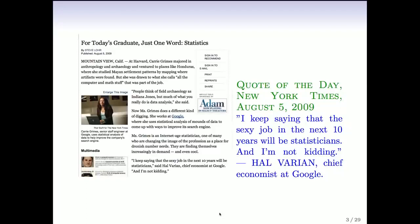Google is a big user of data and a big analyzer of data. Here's a quote that came in the New York Times in 2009 from Hal Varian, the chief economist at Google. He says the sexy job in the next 10 years will be statisticians. There's a picture of Carrie Grimes, a graduate from Stanford Statistics, who was one of the first statisticians hired at Google. Now Google has many statisticians.